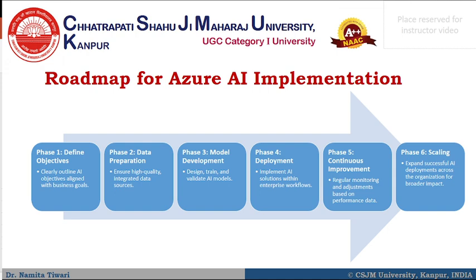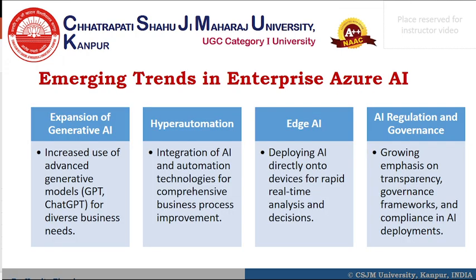The roadmap for Azure AI implementation consists of the following phases: Phase 1 — Define Objectives; Phase 2 — Data Preparation; Phase 3 — Model Development; Phase 4 — Deployment; Phase 5 — Continuous Improvement; and Phase 6 — Scaling.